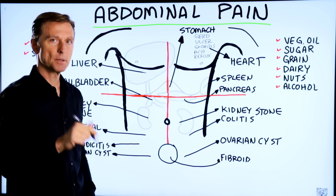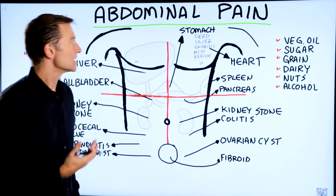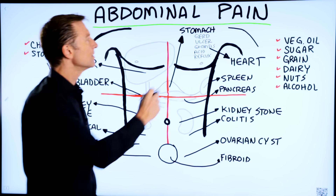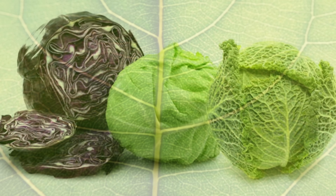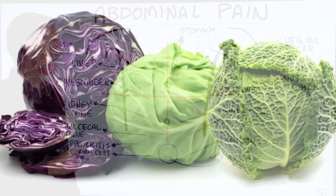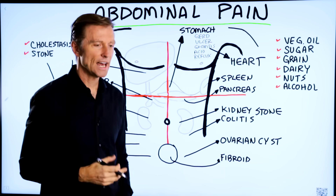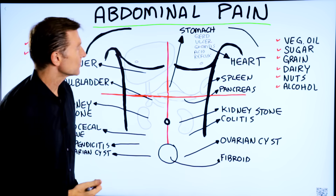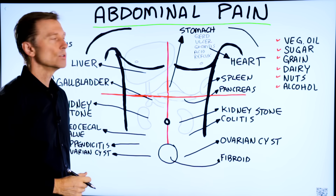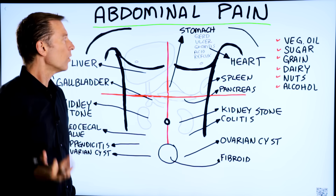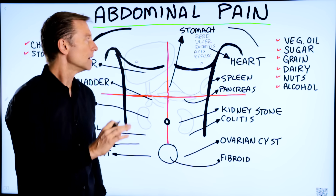For all these things I'll put links down below. You could also have an ulcer, in which case you don't want to add acid — you want to add chlorophyll. Any form of cabbage works really well on ulcers and gastritis, which is when your stomach is inflamed. To get an ulcer or gastritis you'd have to consume a lot of junk food over a long period of time, or it could be alcohol or medication.